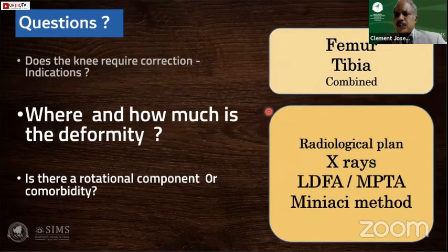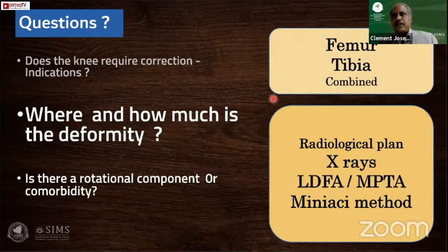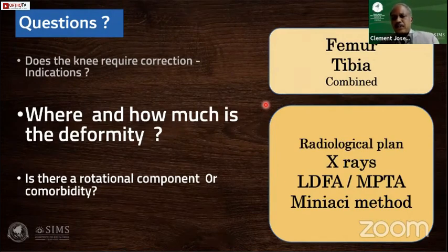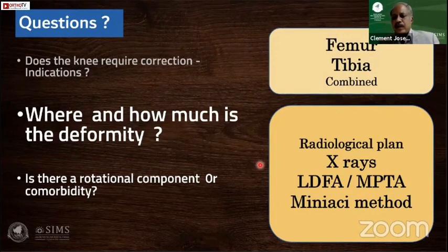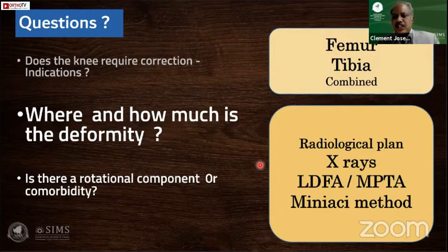It is easy to assume all valgus comes from the femur, but one has to be aware that a certain amount of valgus can be contributed by, or the deformity can be entirely within, the tibia as well. It is very important to have a proper X-ray and do a proper deformity assessment. The two key angles are the Lateral Distal Femur Angle (LDFA) and the Medial Proximal Tibial Angle (MPTA), which indicate whether the valgus deformity originates from the femur or tibia. We will highlight the Miniaci method for calculating the level and amount of correction for a valgus knee.